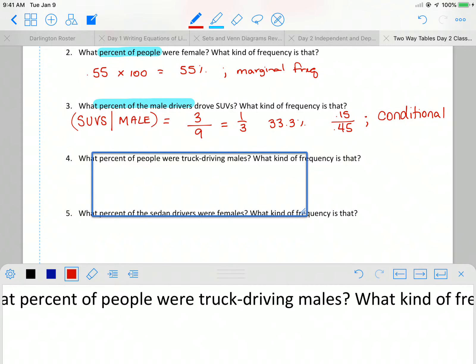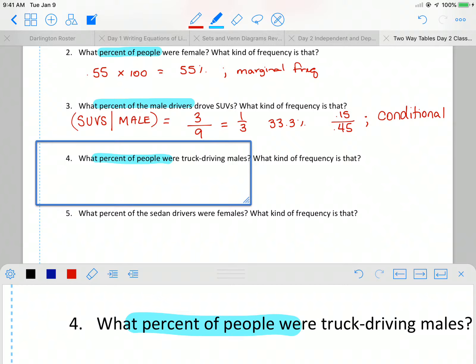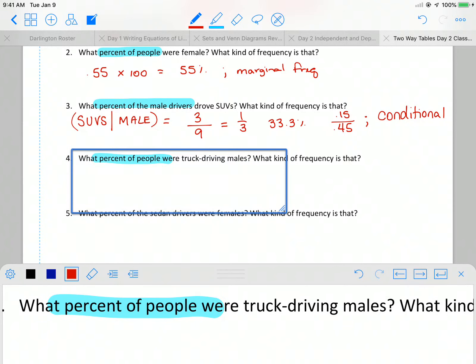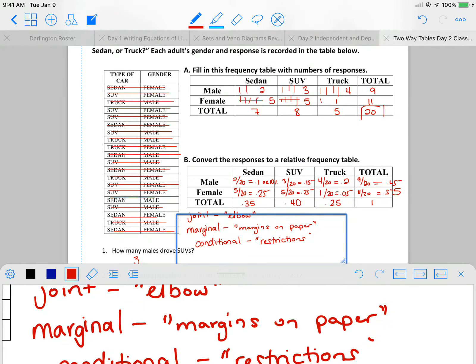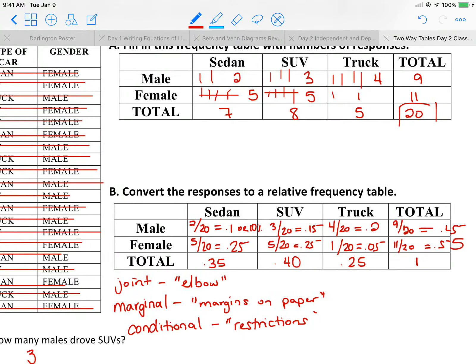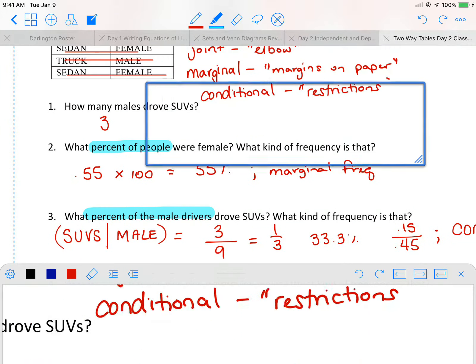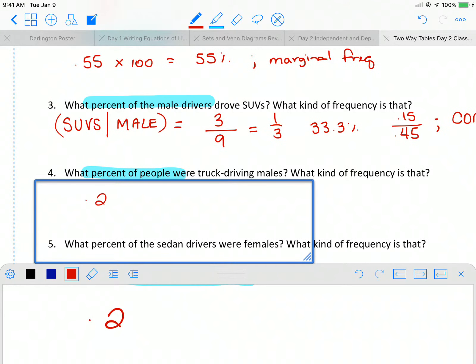What percent of people were truck driving males and what kind of frequency is that? So are we talking about the whole population? Are we talking about just males? Are we talking about just truck drivers? Or what do we got going on? So percent of people. Percent of people means I want everybody. I want to know all the folks that were driving. I want to know that percentage of people were truck driving males. So I look at my answer. So I'm talking about all of them. So I can go back up to my chart. And I can use, I'm talking about the whole shebang here. And then in that whole shebang, I want truck driving males. I want males that drove trucks. I go back down. So I saw 0.2 was on my chart, 0.2. And to get to a percentage, you just multiply by 100. So 20%.